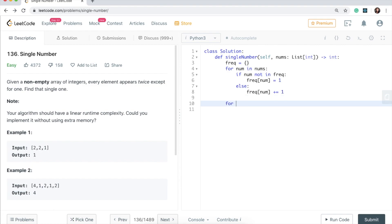And then lastly, what I'm going to do is iterate over my nums array again. And I will say for num in nums, if I find if frequency at that index num is equal to one.